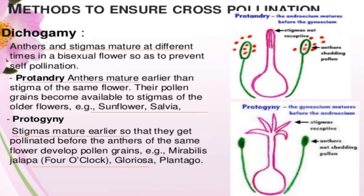Methods to ensure cross pollination: First is dichogamy, where the anther and stigma mature at different times in bisexual flowers so as to prevent self pollination. Protandry is where the anther matures earlier than the stigma of the same flower, so their pollen grains become available to the stigma of an older flower. Example is Phlox and sunflower.